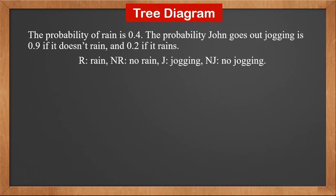First, we label four events. R is rain, NR is no rain, J is jogging, NJ is no jogging.